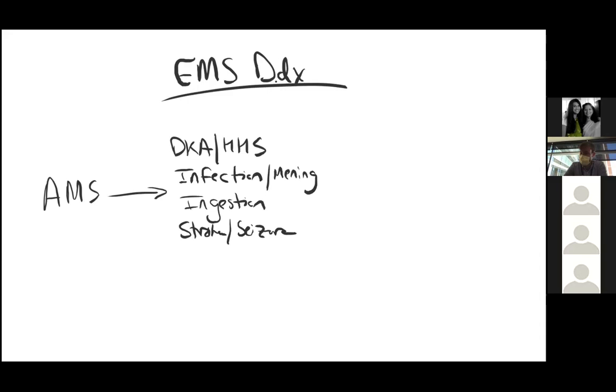So what you guys are hitting at right now is this MIPS mnemonic. Metabolic, infectious, or ingestions, F standing for stroke, seizure, or structural abnormalities, and then T, the one that we're not really getting a history for here, is trauma. I think that's a really excellent way you guys are framing this initial diagnosis.